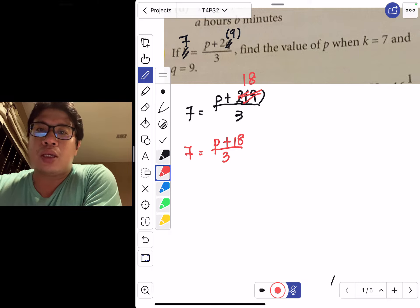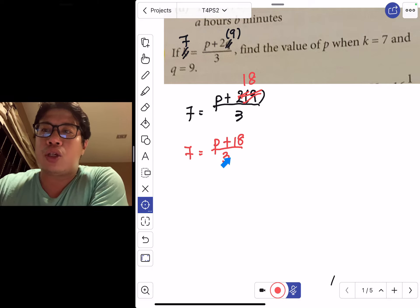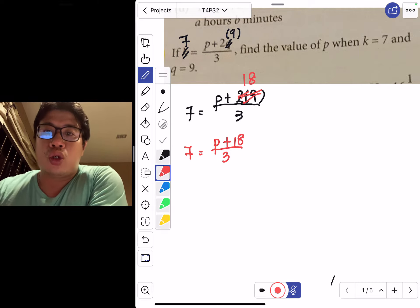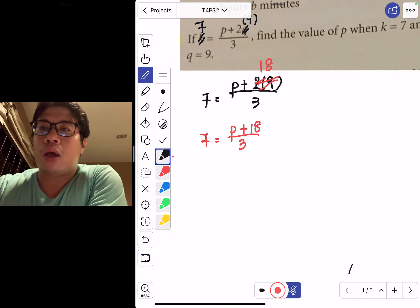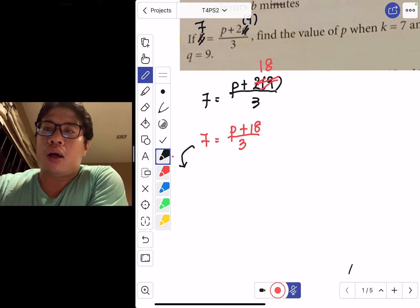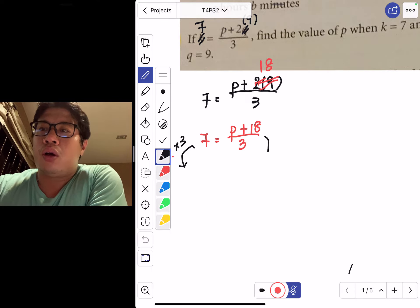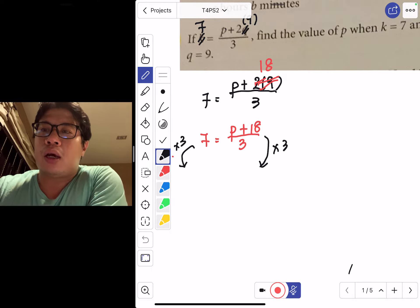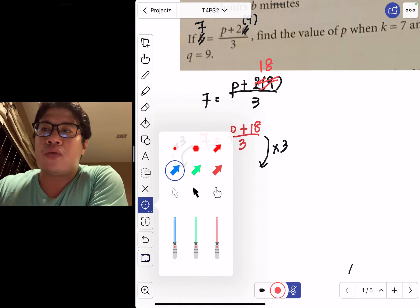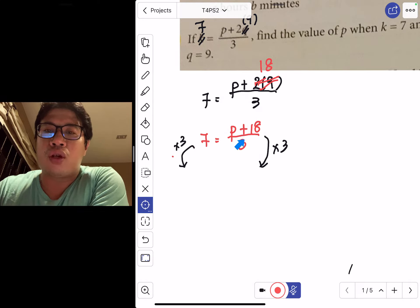The next step: now you know there's 18 and there's 3, and there's the p that you're trying to find. So you basically multiply both sides by 3. Some of you can say that you are bringing the 3 over. Always remember that you're doing the reverse: if you want to get rid of a division of 3, you multiply by 3.